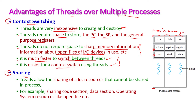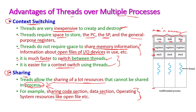When it comes to sharing, threads allow the sharing of many resources which cannot be shared in processes. Threads share the code section, data section (global variables), and I/O files, which are common for all threads. This kind of sharing is not possible in a multiple process system.